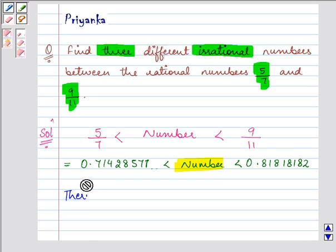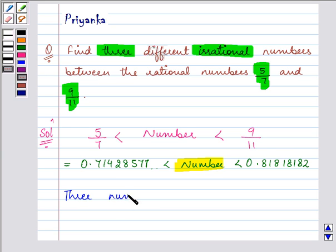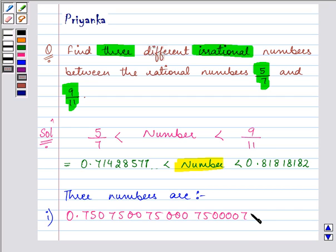So three numbers which we are giving to you are 0.75075000750007500075400007540000754075 and so on. These are irrational numbers that means they are non-terminating, non-recurring numbers.